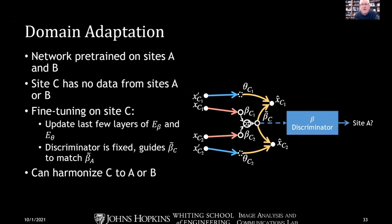Domain adaptation with this framework is straightforward. Suppose a network is trained on sites A and B, and site C wants to harmonize its data to A or B without access to A and B data. We fine-tune the already-trained network using only a few of the last encoder layers, keeping the discriminator fixed — this ensures the beta distribution from site C is similar to that of site A. The result is a network specific to site C that can harmonize C to A or B. This constitutes true domain adaptation without retraining from scratch.